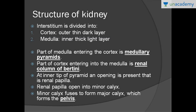The internal structure of the kidney is divided into two parts: the cortex, which is the outer, darker, and thinner part, and the medulla, which is the inner thick layer. The part of medulla projecting into the cortex is called the medullary pyramid, and the part of cortex projecting into the medulla is called the renal column of Bertini. At the inner tip of each pyramid are the renal papillae, which open into 10–16 minor calyces, which further open into 2–3 major calyces, forming the renal pelvis that extends into the ureter.